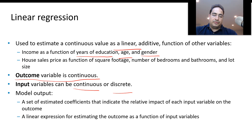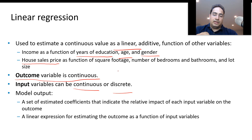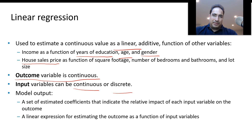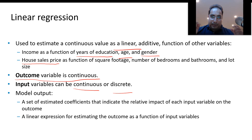Another example is if you want to create a model for house sales price based on square footage, number of bedrooms, bathrooms, and lot size, then you could use linear regression. It tells you which variable affects the outcome the most. The output of this model is a set of estimated coefficients that indicate the relative impact of each input variable over the output variable, and it also gives you an expression that tells you how to get the actual output.